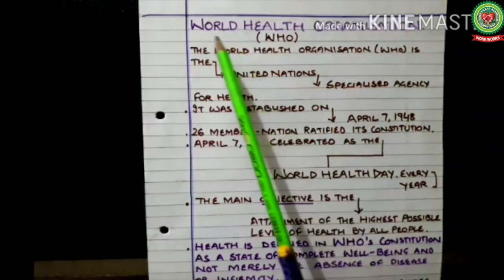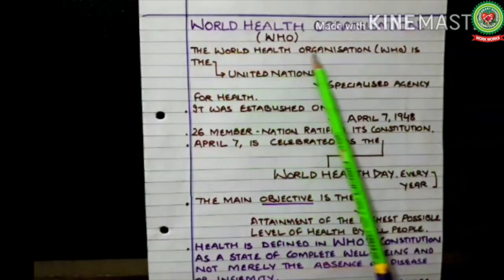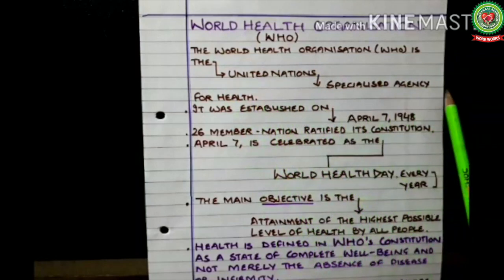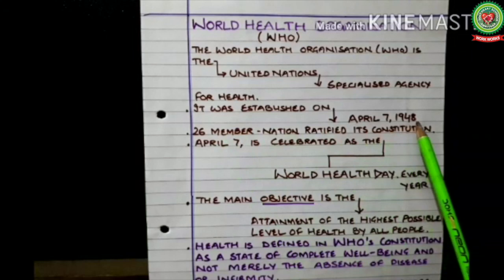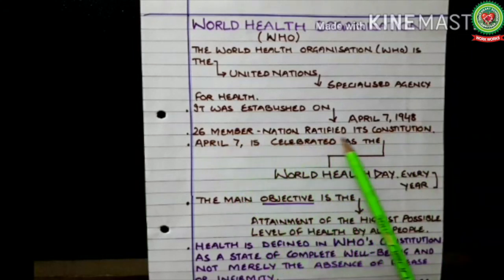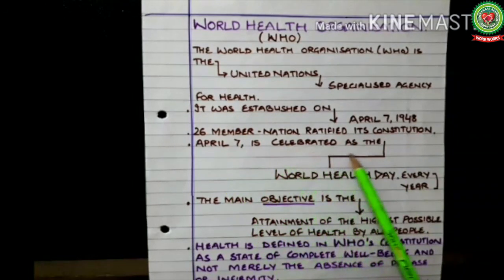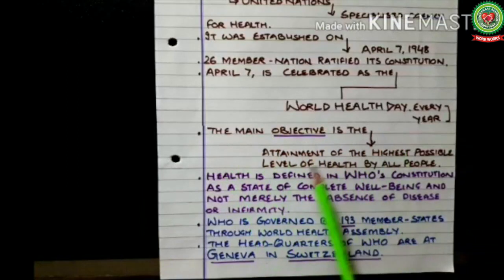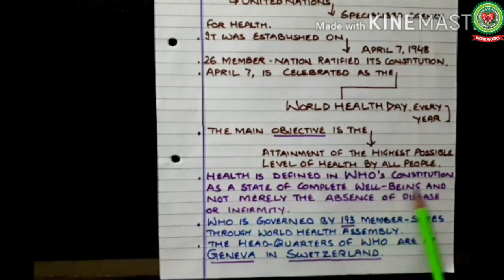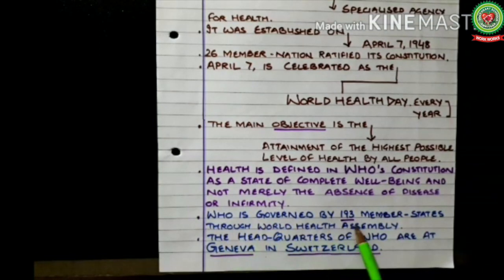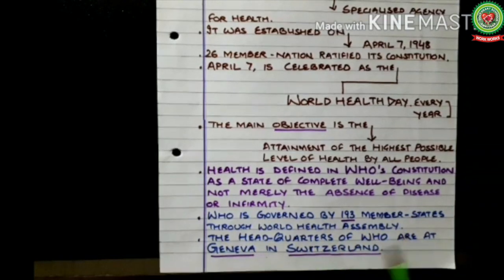Now we are going to start with the next agency — World Health Organization. WHO is the United Nations specialized agency for health. It was established on 7th April 1948, when 26 member nations ratified its constitution. April 7 is celebrated as World Health Day every year. The main objective is the attainment of the highest possible level of health by all people. Health is defined in WHO's constitution as a state of complete well-being and not merely the absence of disease or infirmity. WHO is governed by 193 member states through the World Health Assembly. The headquarters of WHO are at Geneva, Switzerland.